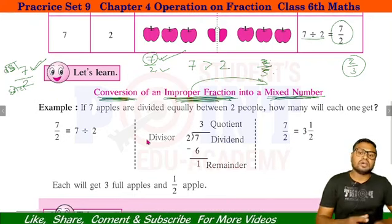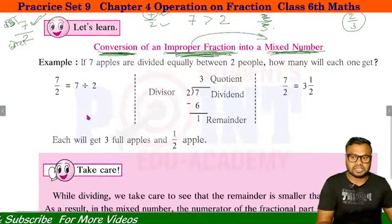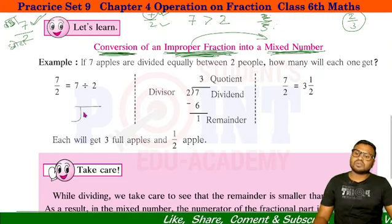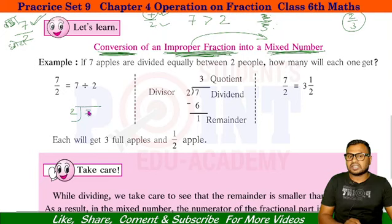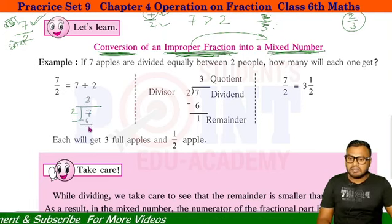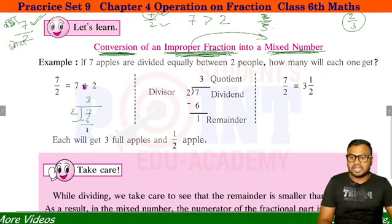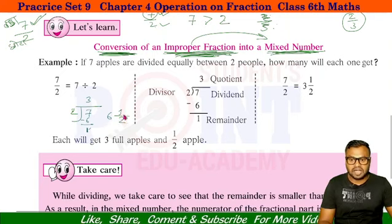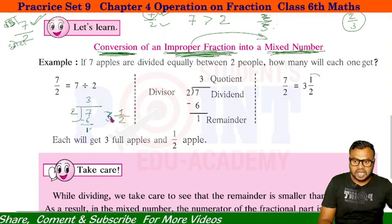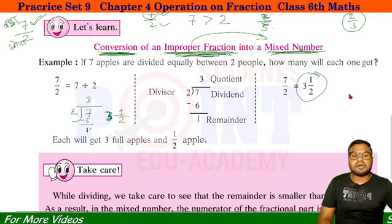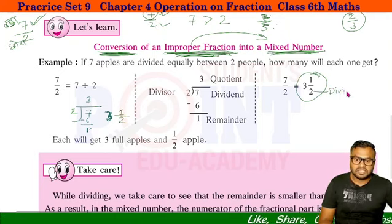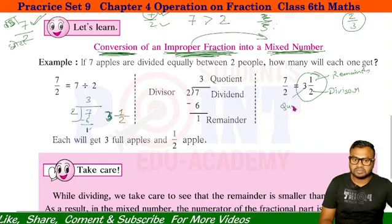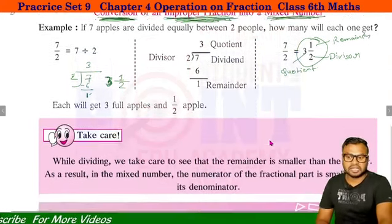اب اس کو Mix Fraction میں بدلتے کیسے ہیں؟ بہت simple ہے — 7 upon 2 کا مطلب 7 کو 2 سے divide کرنا۔ 2 کے table میں 7 نہیں آتا پر 6 آتا ہے — 3 times۔ 2 threes are 6, minus کریں گے، 1 بچا۔ تو Divisor نیچے رہے گا، Quotient 3 ہوگا، اور Remainder 1 ہوگا۔